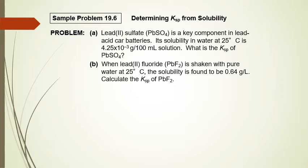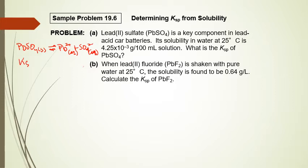Now let's determine Ksp from solubility. For lead(II) sulfate, PbSO4 — a key component in lead-acid car batteries — its solubility in water at 25°C is 4.25 × 10⁻³ grams per 100 mL of solution. What is the Ksp for PbSO4? First, set up the equilibrium reaction: PbSO4(s) → Pb²⁺(aq) + SO4²⁻(aq). With a 1-to-1 ratio, Ksp equals [Pb²⁺] times [SO4²⁻].